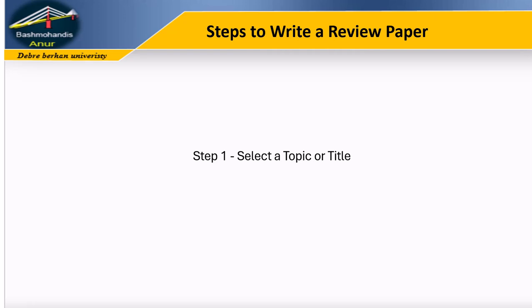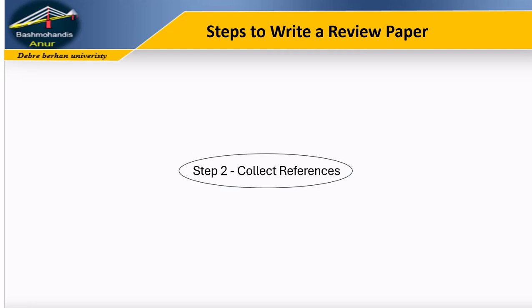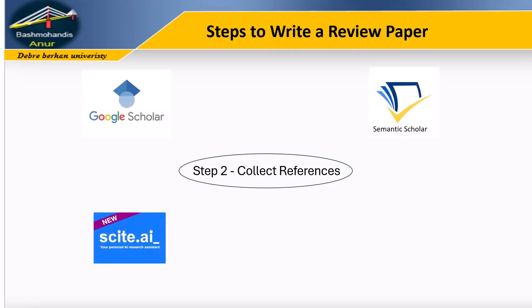Alternatively, read original research papers to spot areas that need a comprehensive review. Step 2: Collect references. Gathering references is crucial. Use tools like Google Scholar, Scite, Semantic Scholar, or Connected Papers to find relevant papers. Google Scholar is a widely used database that can help you find scholarly literature across many disciplines and sources.